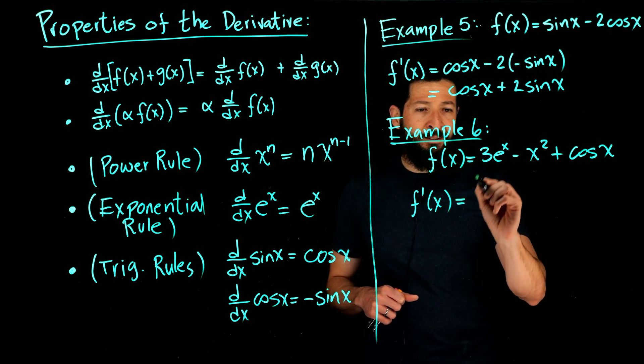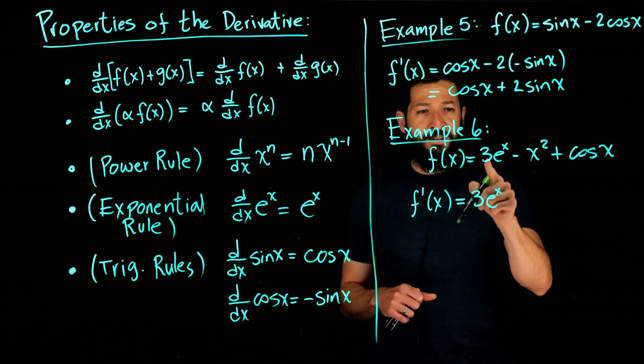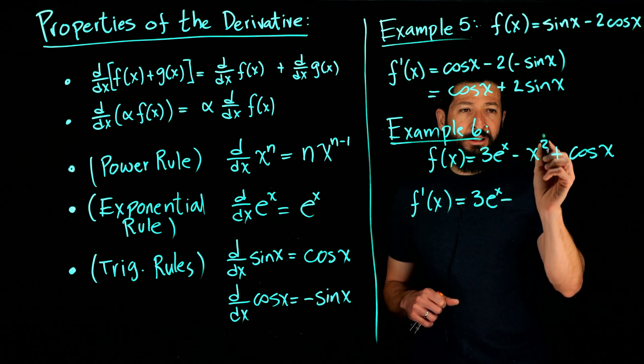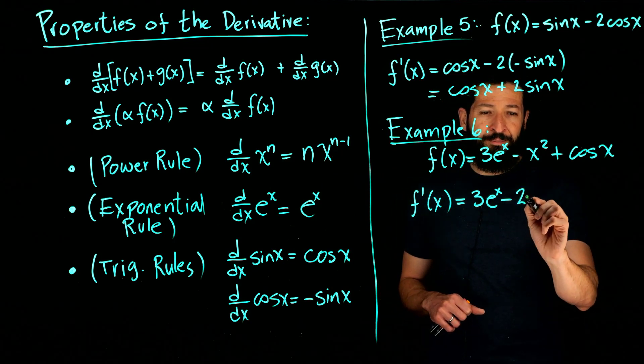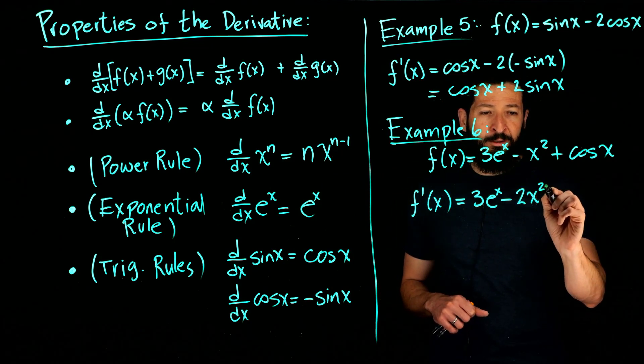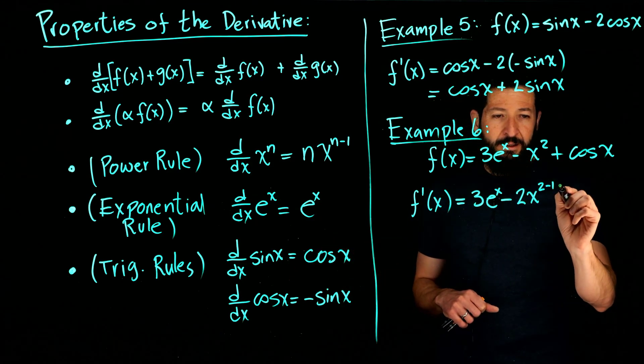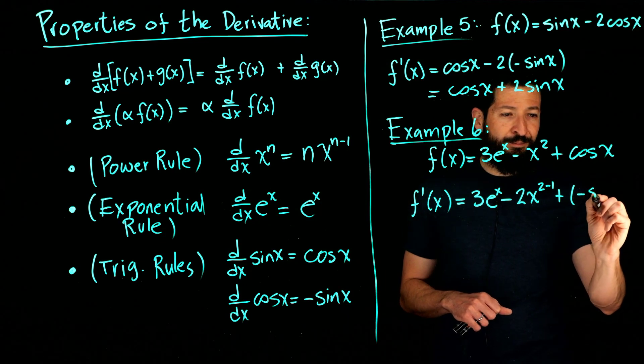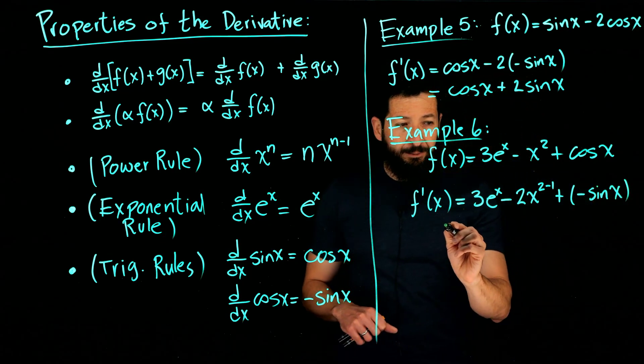Let's go ahead and compute it. So derivative of e to the x is e to the x. The first term does not change: 3 times the derivative of e to the x is 3 times e to the x. Now this one is a power rule situation, so we're going to drop the 2, x to the power of 2 minus 1. And the cosine, which the derivative of the cosine is negative sine, so that's what you get there.